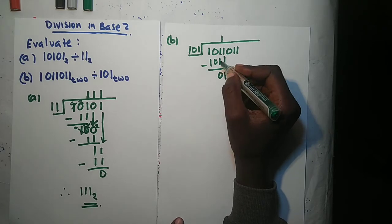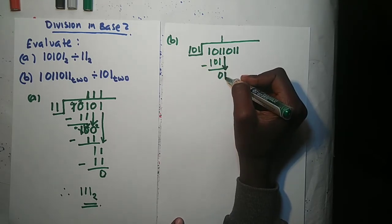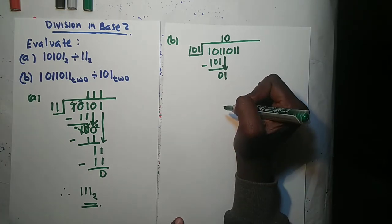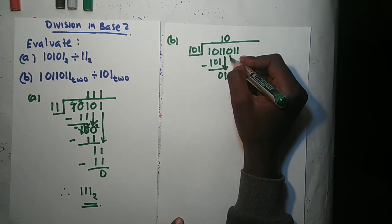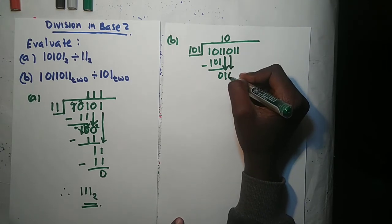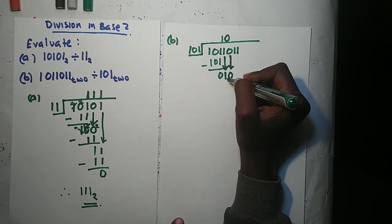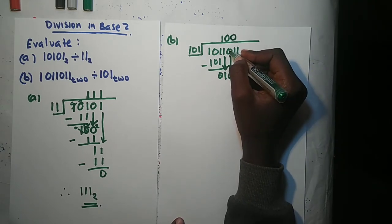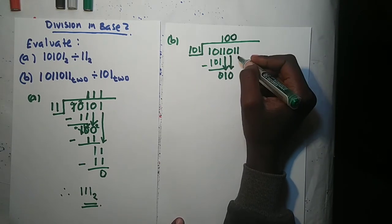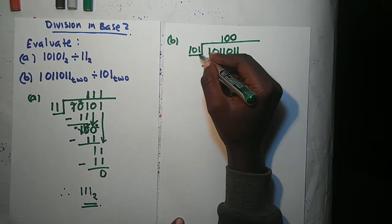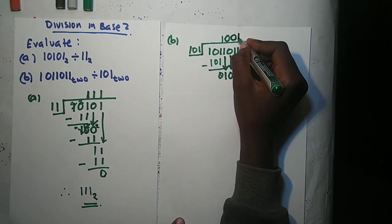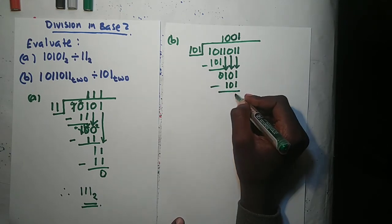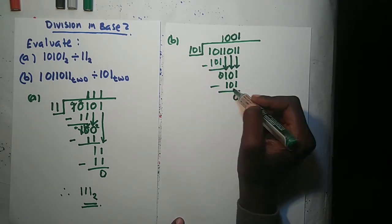After bringing down the 1, 101 into 1 still can't go in, so we write a 0. We bring down the next number, which is 0. So 101 into 10 — it can't, and we write another 0 because even after bringing down the number still can't go in. We bring down the next digit: 101 into 101 — it goes in once. We multiply 1 times 101 to give 101, subtract, and get 0. Then 101 into 0 — it can't, so we bring down the last digit.